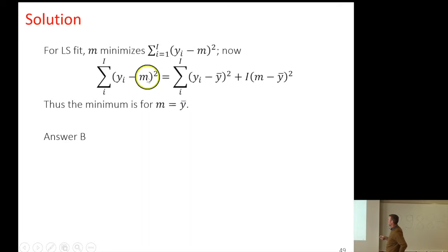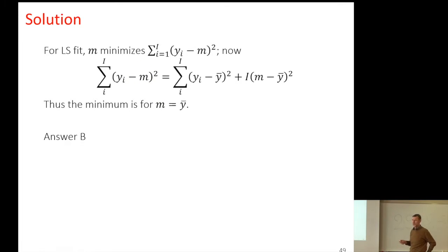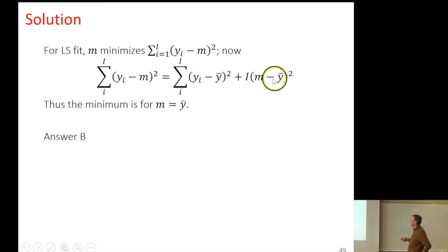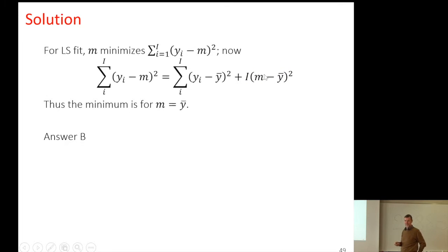Remember, the problem we're solving is optimizing with respect to M — the data yi is fixed. So we want to find the M that minimizes this expression. Since y is fixed, y-bar is also fixed — it's a fixed quantity. The only question that remains is what value of M minimizes this, and obviously the answer is y-bar.